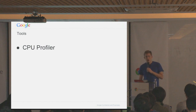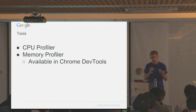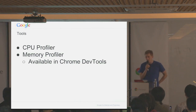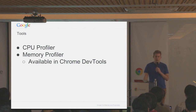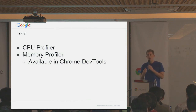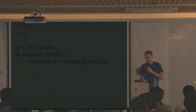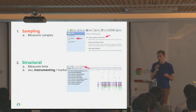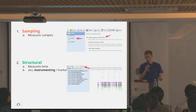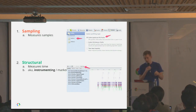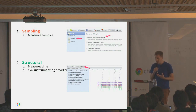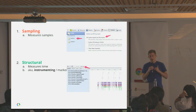I want to talk about tools. There's a CPU profiler and a memory profiler built into Chrome. I'll spend some time on different ways to profile CPU usage in your game, since game development is often about squeezing out the last bit of performance. There are two primary ways of profiling CPU usage: the first is sampling, and the second is structural. Sampling is what happens when you go into Chrome DevTools, go to profiling, and collect a JavaScript CPU profile. Structural profiling is a bit harder to get to, but it can sometimes provide much more insightful information.